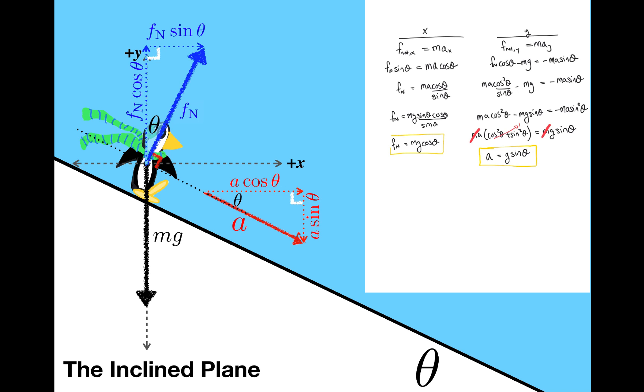Also, substituting a into the equation for fn results in fn equals mg cosine theta. Again, the same result that I arrived at with the other set of axes. So as promised, the calculation is more involved with this set of axes, but it's still doable and leads to exactly the same result.